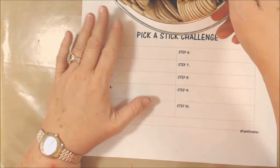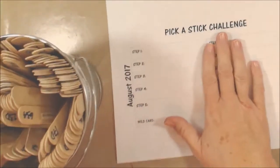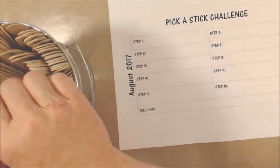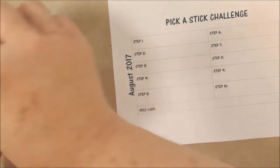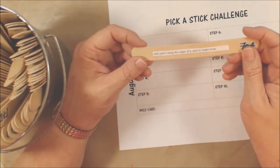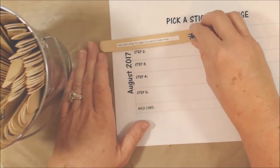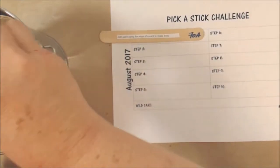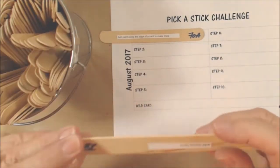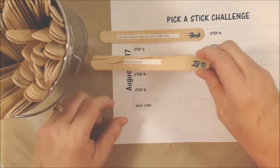All right, so let's get to the drawing of the sticks of fate for August. Put this kind of over here to the side. Drawing—this says add paint using the edge of a card to make lines. So there's step one. Step two, add some lace.